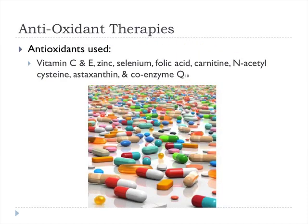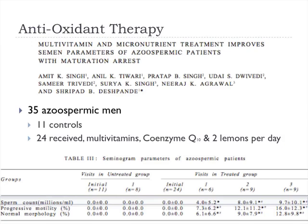Regarding antioxidant therapy — vitamin C, E, zinc, selenium, coenzyme Q10, among others — a study of azoospermic men had 11 controls and 24 receiving multivitamins, coenzyme Q10, and two lemons per day. All men receiving treatment had some level of sperm in the semen compared to none in the control group, followed at one, two, and three months. This indicates a potential role for antioxidant therapy, though results have not been as robust in the oligospermic group.